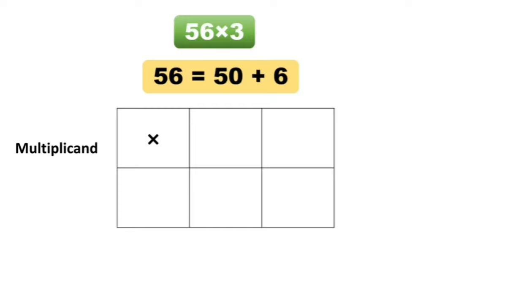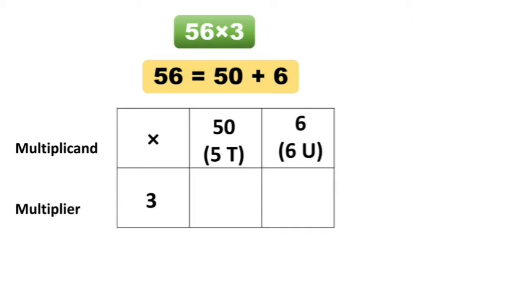So if we have the multiplicant and multiplier: 50 and 6, and the multiplier is 3. Let's multiply 3 and 50. 3 × 5s are 15, and this 0 will come over here. So 3 multiplied by 50 is equal to 150.